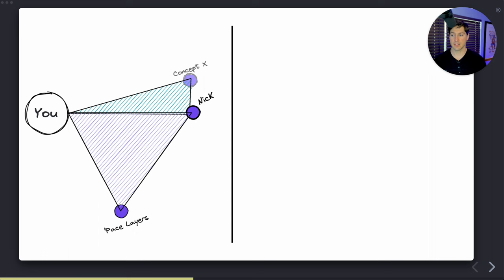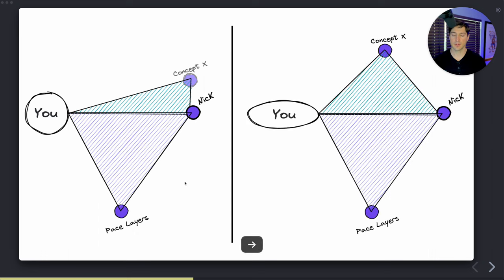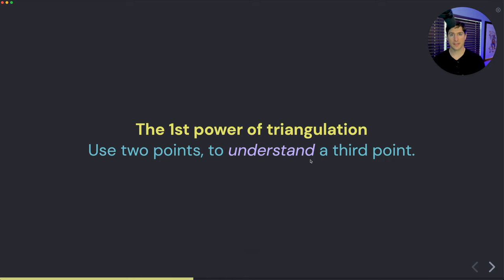Because if you didn't have these two dots to triangulate around, then you wouldn't be able to make sense of it. So very quickly with concept X, you can pull it into a more balanced triangle using me as the pivot point along with yourself—the two known points to extrapolate and understand a third point. And that's the first power of triangulation: using two known points to understand a third point.